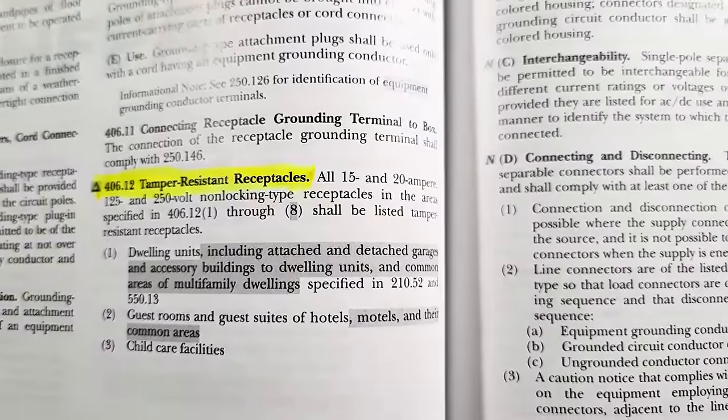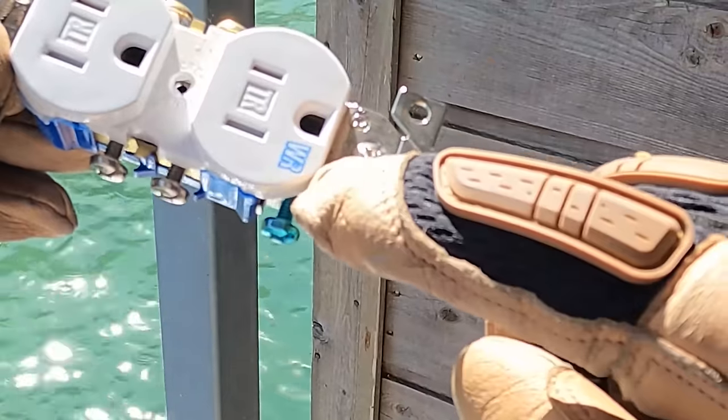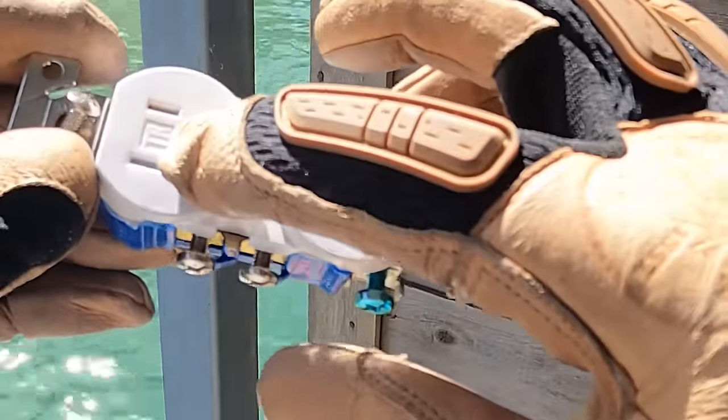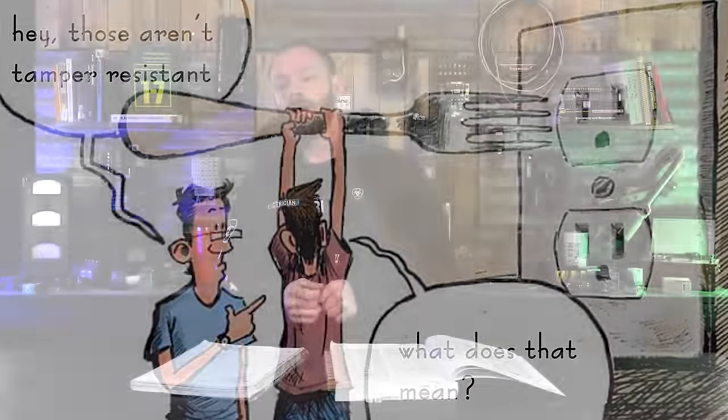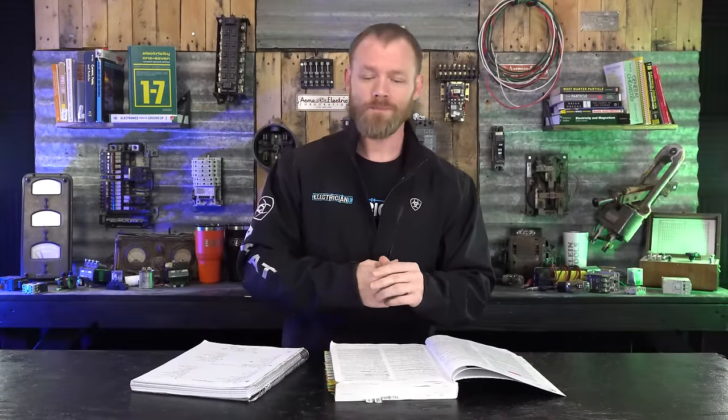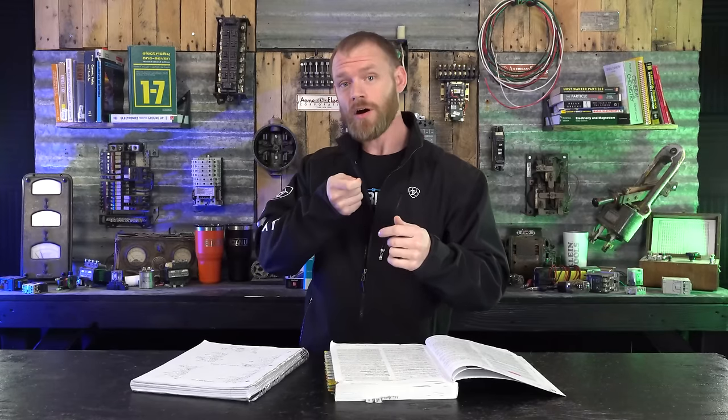Next thing we have is a tamper resistant receptacle or a TR receptacle. Sometimes you'll see weather resistant, tamper resistant. So they'll say WRTR if you use those outdoors. So they're still tamper resistant, meaning that somebody can't go stick a piece of metal inside and shock themselves like children used to do. Tamper resistant receptacles are required to be put pretty much everywhere that somebody could potentially go and try to stick something into a receptacle. They've got these little plastic flaps on the inside of them. And the only way to get the plastic flaps to fold in when you plug something in is to put equal pressure on both sides.